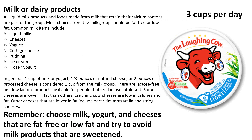Then we have milk or dairy products. All liquid milk products and foods made from milk that retain their calcium content are part of this food group. Most choices from the milk group should be fat free or low fat. Common milk items include liquid milks, cheeses, yogurts, cottage cheese, pudding, ice cream, or frozen yogurt. One cup of milk or yogurt, one and a half ounces of natural cheese, or two ounces of processed cheese is considered one cup from the milk group. There are lactose-free and low lactose products available for people that are lactose intolerant.